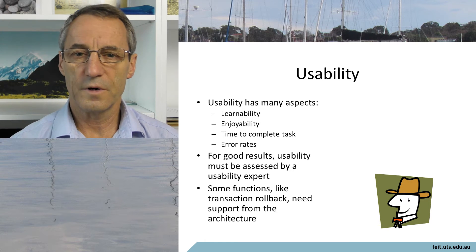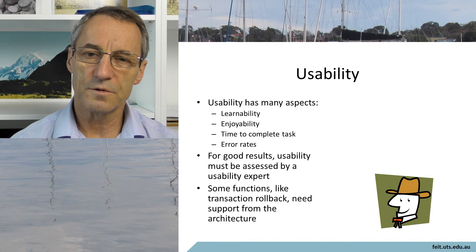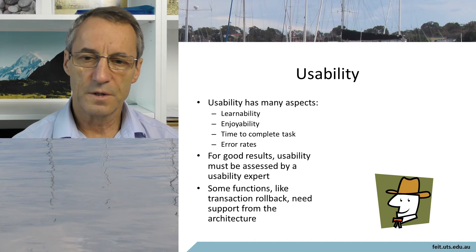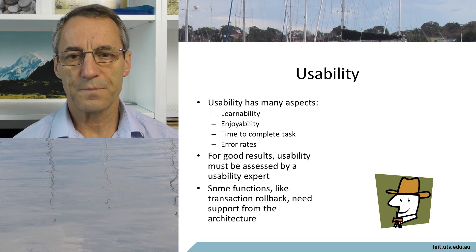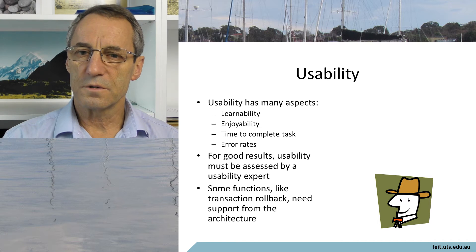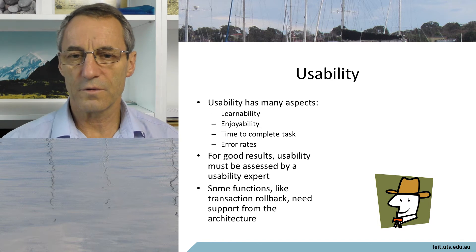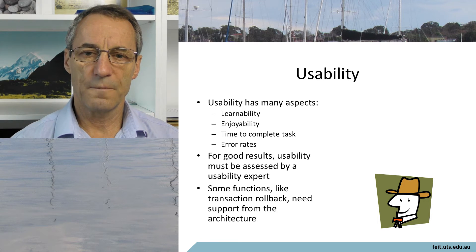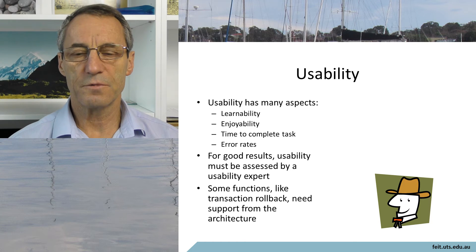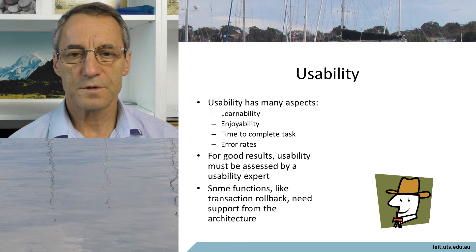A lot of usability is provided in programming terms, so the question is: what about usability affects the architecture? One example is if you have a web-based system or an e-commerce system with a shopping basket and the person wants to change their mind — what architecturally do you have to do to allow them to reverse that transaction? It's those kinds of things where you have long-running transactions that need to be reversed or recovered, which can affect the user experience, so it's part of usability.